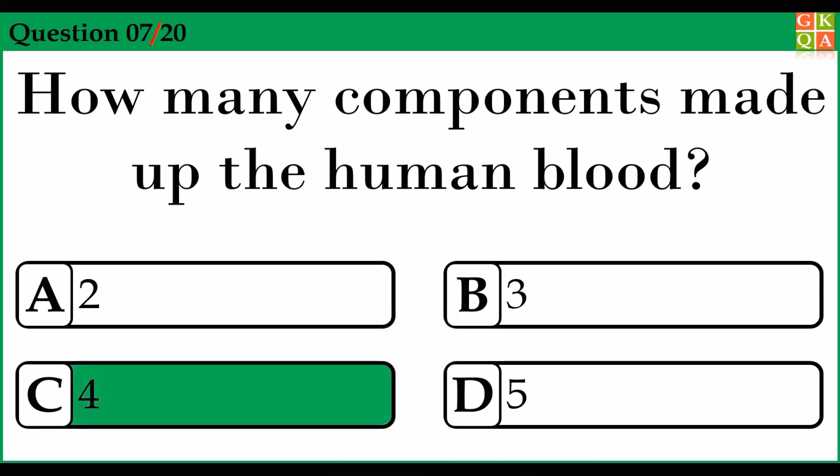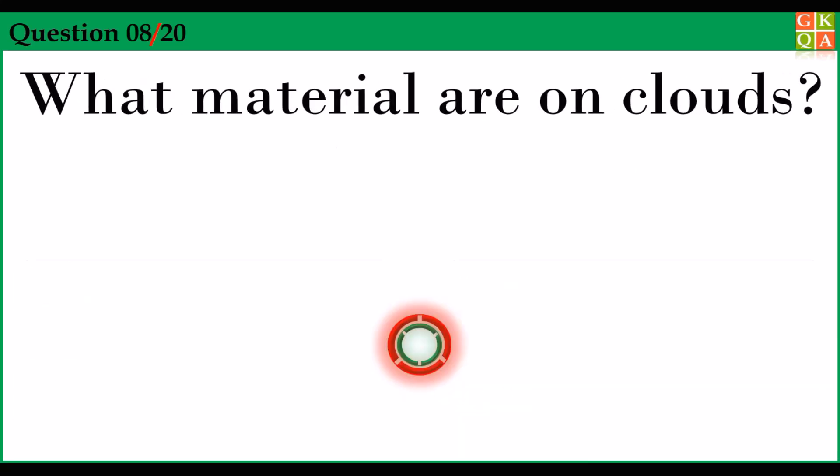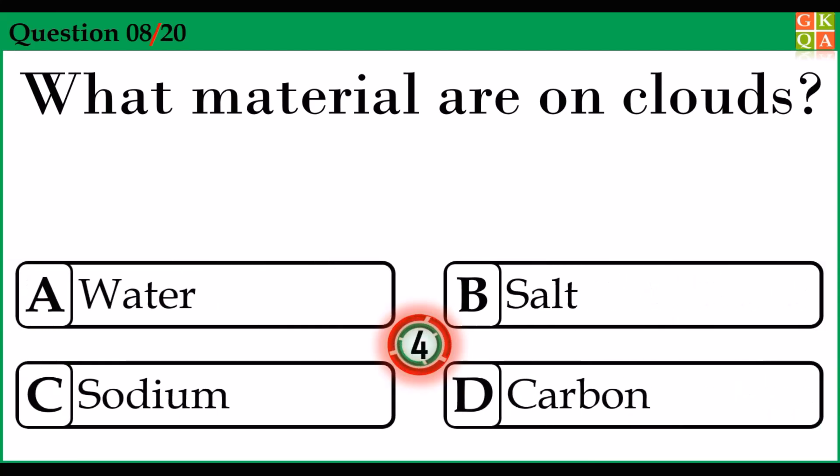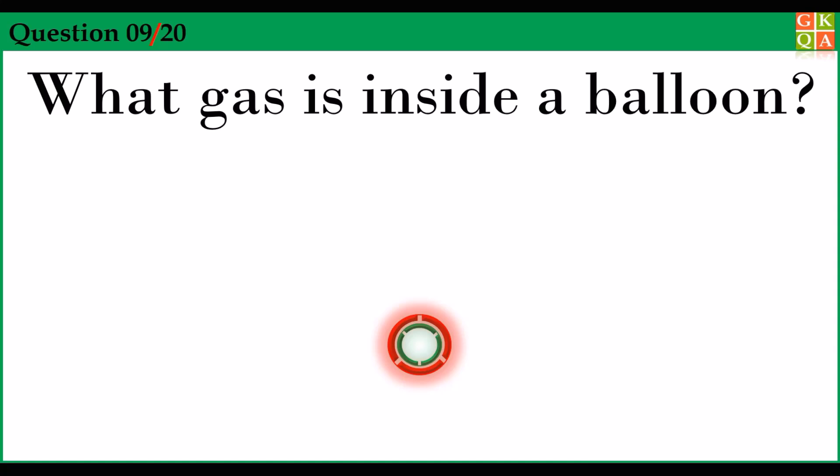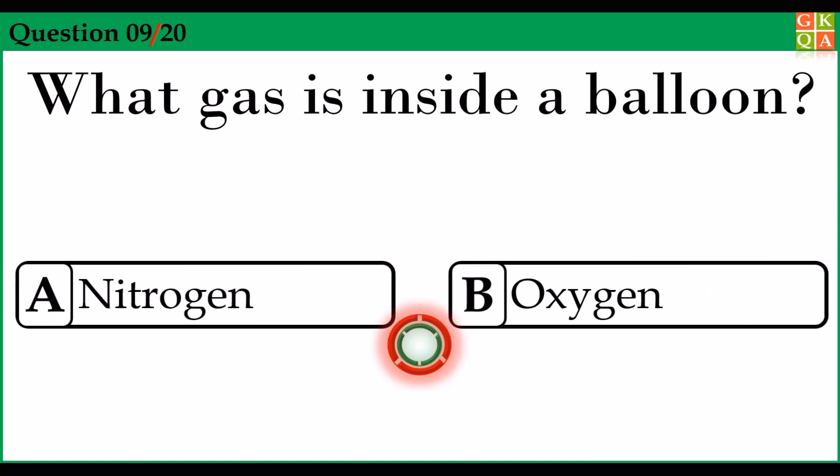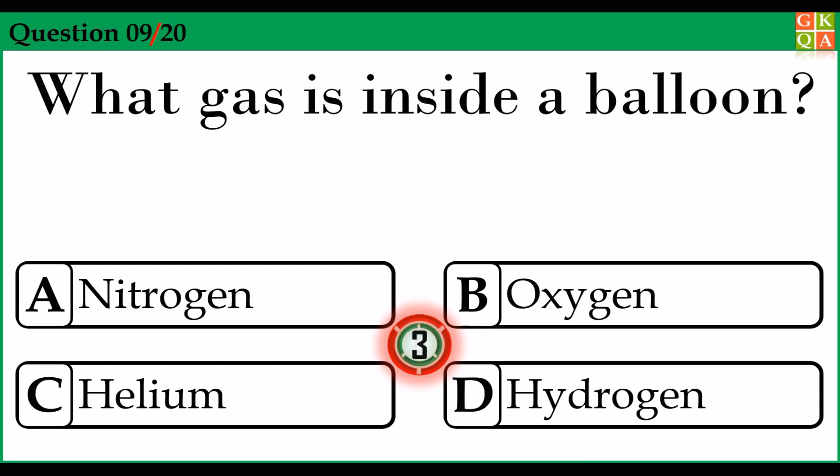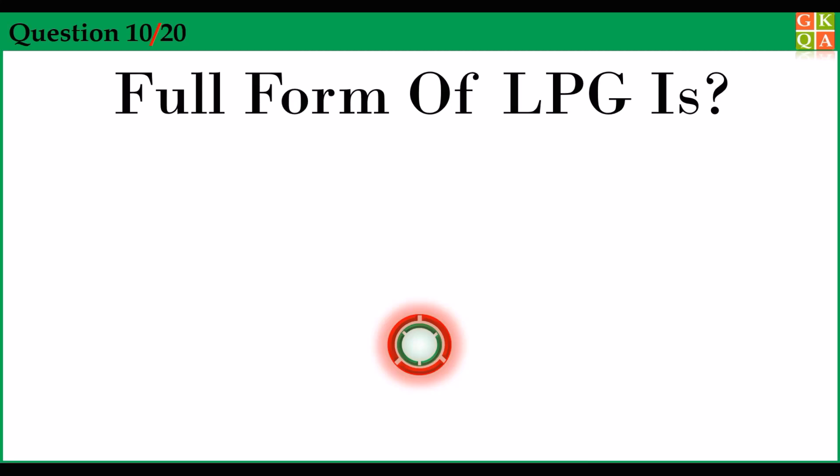Answer option C: 4. What material are clouds made of? Answer option A: Water. What gases are inside a balloon? Answer option C: Helium. Full form of LPG is?